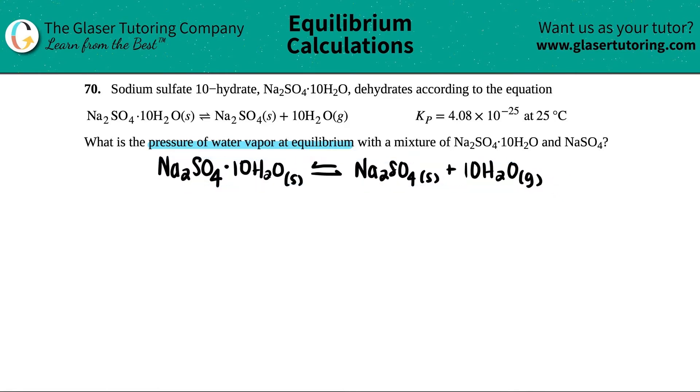Now the question is asking for the pressure of water vapor at equilibrium. Water vapor is H2O in gas form. So they're looking for this compound over here, and they're looking for the pressure. When dealing with Kp, the only pressure unit allowed in the Kp formula is atmospheres (atm). So we're looking for the atm of the H2O.